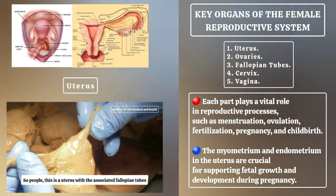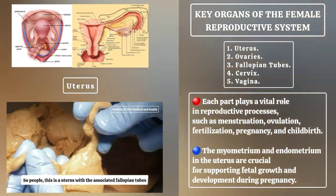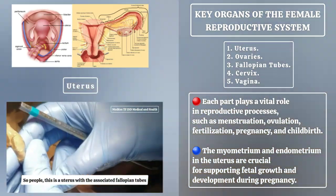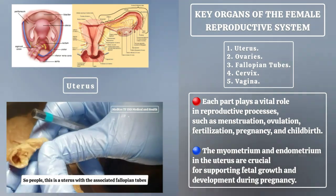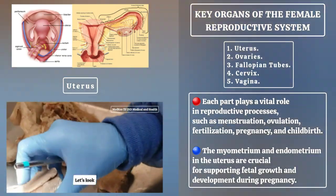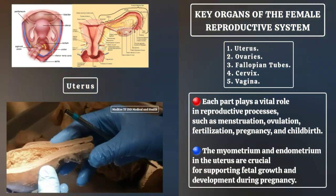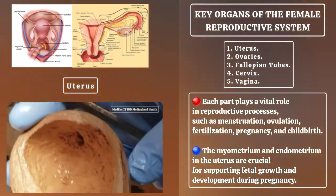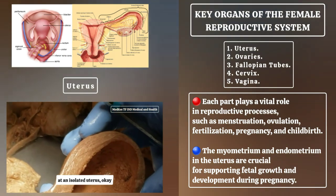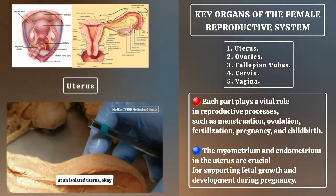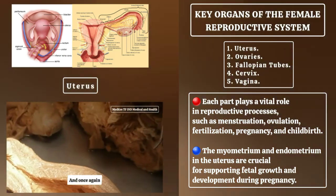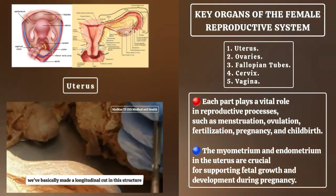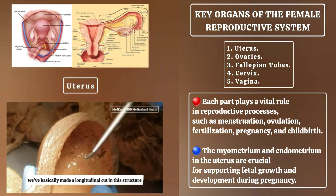This is a uterus with the associated fallopian tubes. Let's look at an isolated uterus. We've basically made a longitudinal cut in this structure.